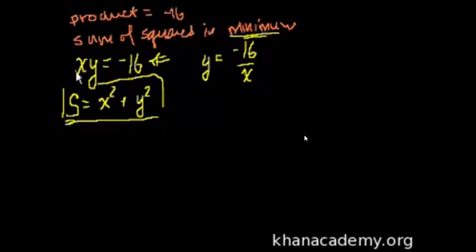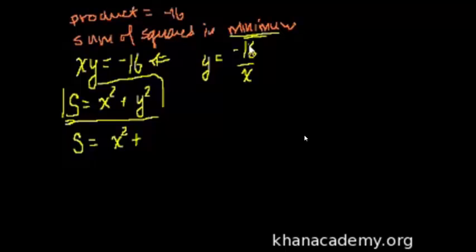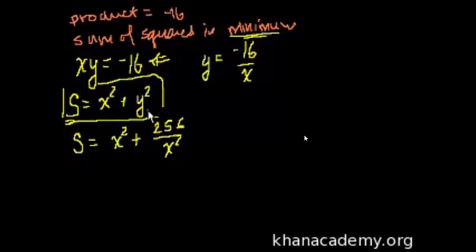If we take y equals minus 16 over x and substitute it into the sum of squares, we get s equals x squared plus y squared. Since y equals minus 16 over x, y squared equals minus 16 squared over x squared, which is 256 over x squared. So s equals x squared plus 256 over x squared.